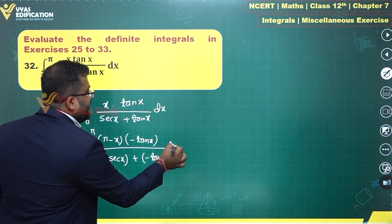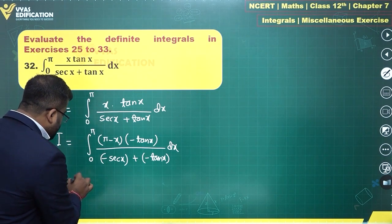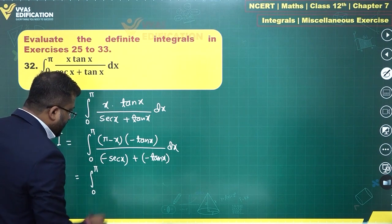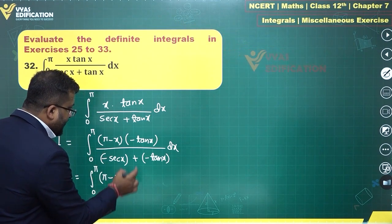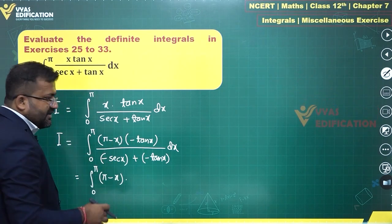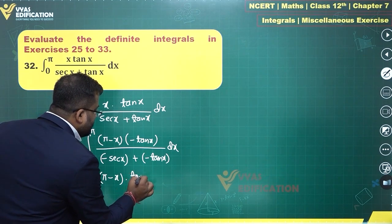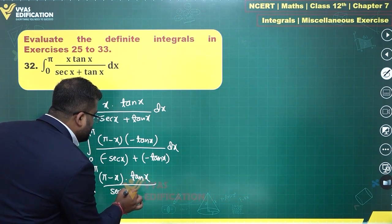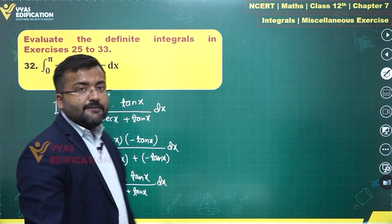After substitution, if you observe carefully, the extra minus from the numerator and denominator get cancelled, and what remains is the integral from 0 to π of (π - x)·tan x divided by (sec x + tan x) dx.